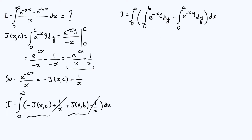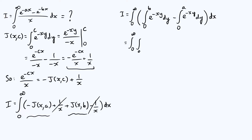We can rewrite everything in the brackets as a single integral, because integrating from 0 to b and subtracting the integral from 0 to a is the same as just integrating from a to b. So I becomes the integral from 0 to infinity of the integral from a to b of e^{-xy} dy, integrated with respect to x. However, trying to evaluate the integral in this order would bring us back to the starting point.